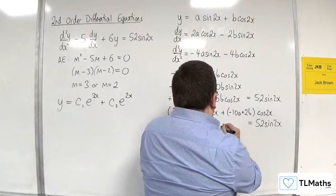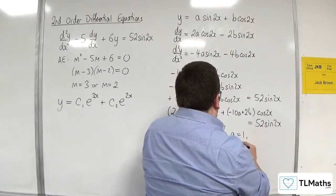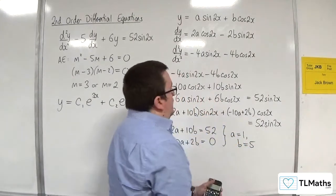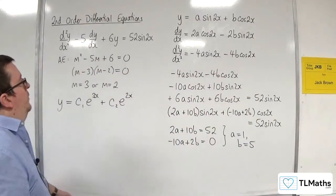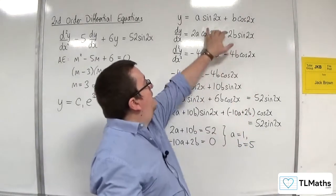So, a is equal to 1. And b is equal to 5. So, these are the a and the b that go there.